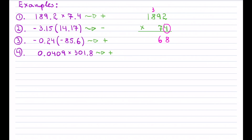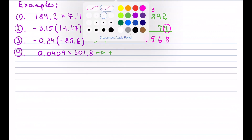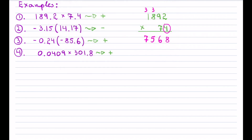So: 4 times 2 is 8; 4 times 9 is 36, carry the 3; 4 times 8 is 32 plus the 3 is 35, carry the 3; 4 times 1 plus the 3 is 7. Now next I move over to the 7.